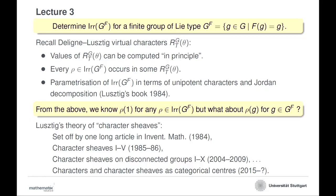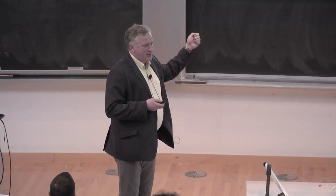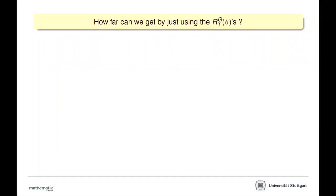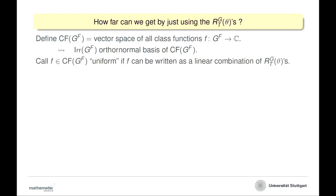Before we really have the courage to look at this, let's try to understand why we really need this, why the R_T(theta) business is not enough to deal with this problem. Let's try to answer how far we can get if we just work in this world of the R_T(thetas). We look at the vector space of all class functions on G^F, and we call a class function uniform if it can be written as a linear combination of R_T(thetas).